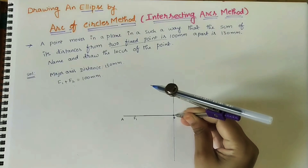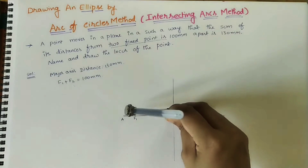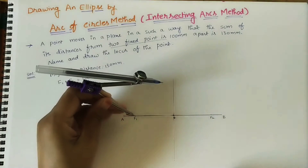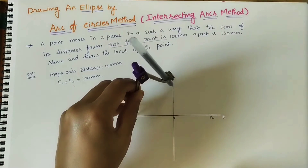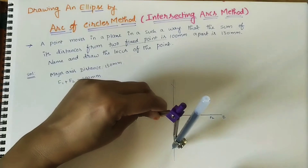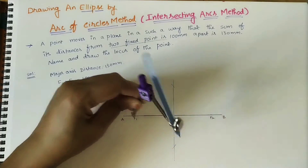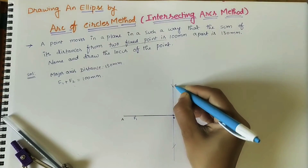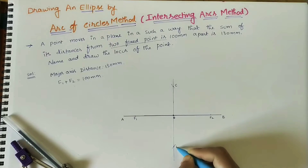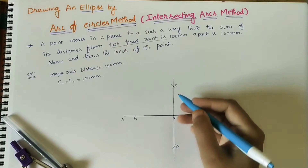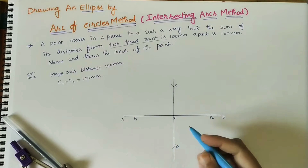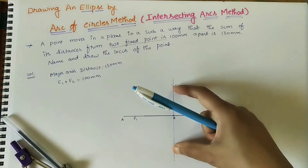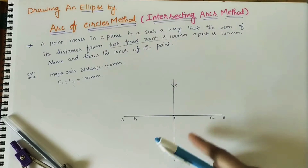For marking the minor axis length, take OA radius (or OB radius — both are the same). With F1 as center and OA radius, draw an arc above and below the major axis. The intersection points are the endpoints of the minor axis, labeled C and D. If the question asks for the minor axis length, measure CD using a scale and give the value.